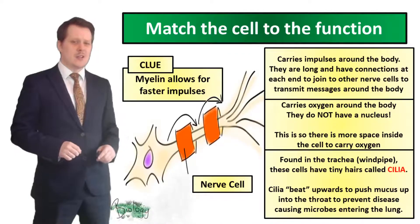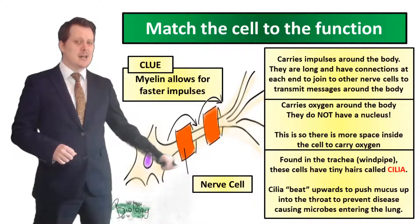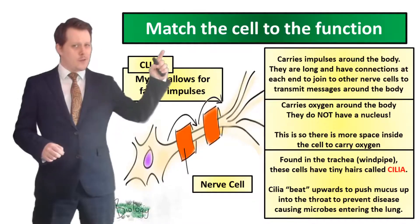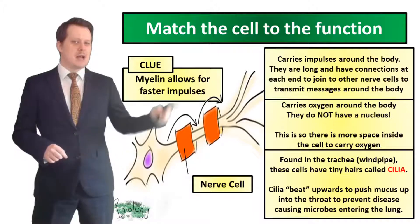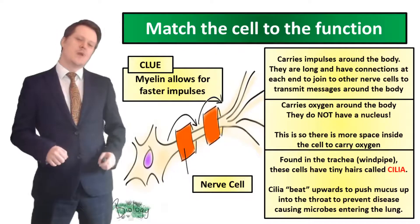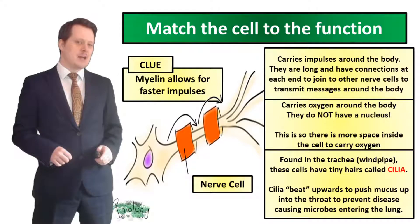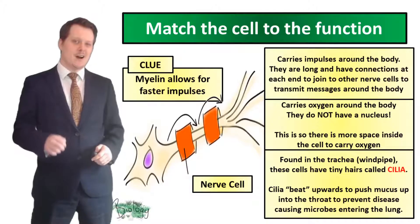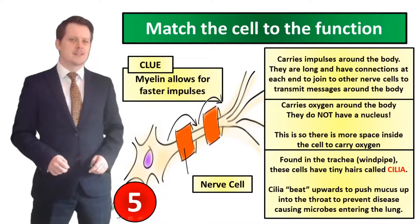If you haven't got a worksheet, we're going to do it slightly differently. Here we have a picture of our specialized cell, the name of the cell, and a clue about its function. We've got three functions of specialized cells on the right side of the screen, and you need to match up this cell to its correct function using the clue and picture. I'm going to put five seconds on the clock — if you need more time pause the video, and when you're finished we'll go through the answers together.